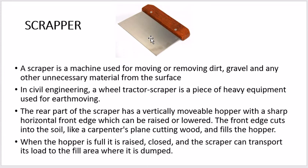In civil engineering, a wheel tractor scraper is a piece of heavy equipment used for earth moving. This scraper can be loaded on a tractor, or there is a separate machine for it, or it can be added onto a bulldozer. If you want to use a heavy-duty scraper, it would be used with a bulldozer.